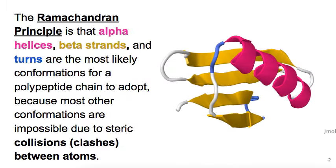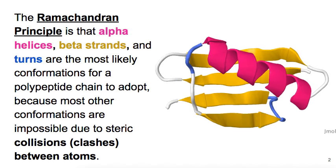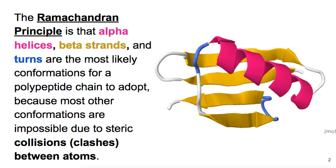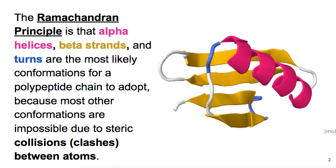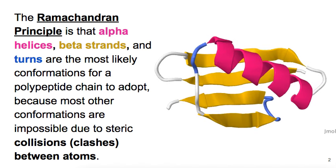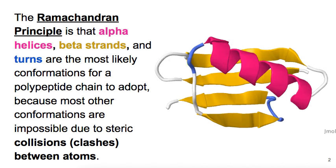Most proteins consist almost entirely of alpha helices and beta sheets connected by turns and coil shown here in white. It is the avoidance of clashes between atoms that forces proteins to adopt these common secondary and tertiary structures.